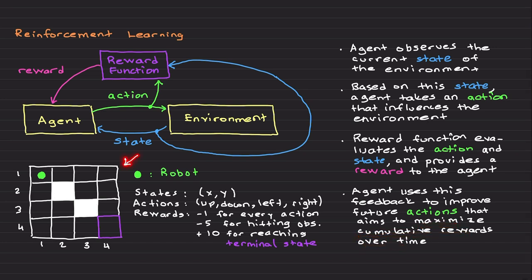Let's look at a robot navigation problem in a four-by-four environment with obstacles. The states are defined by x and y coordinates; the robot is currently at state (1,1). Actions available are up, down, left, and right. The reward mechanism gives minus one for every action taken, to minimize energy. The goal is to take the robot from its start position to the purple goal state, also called the terminal state.